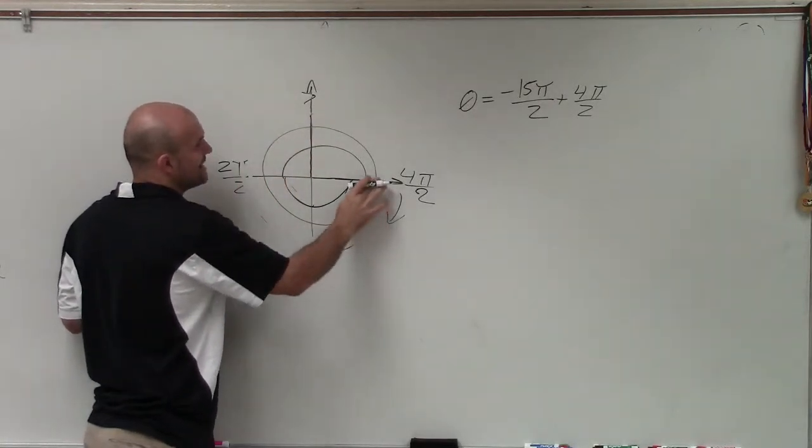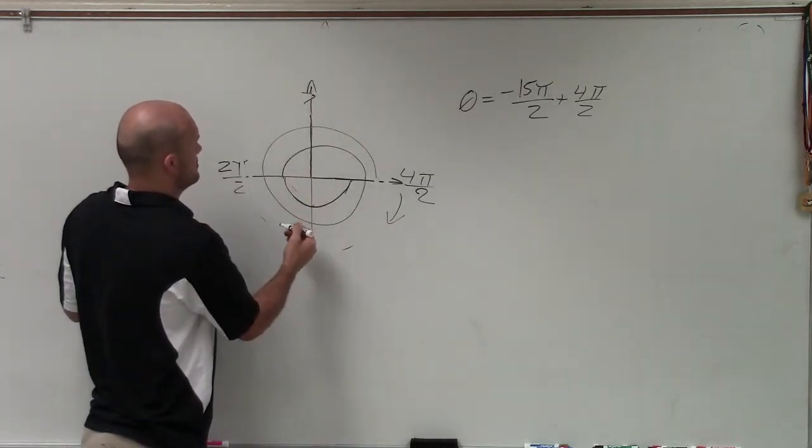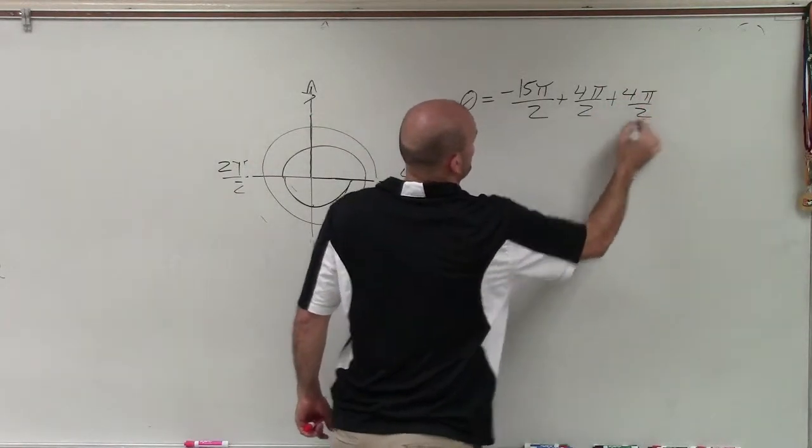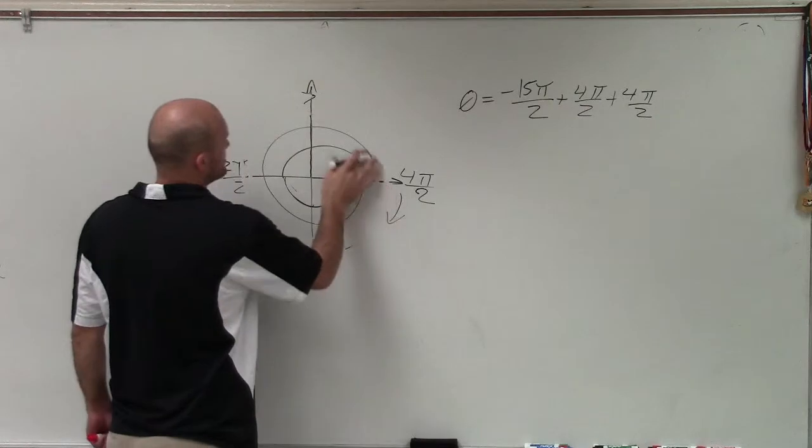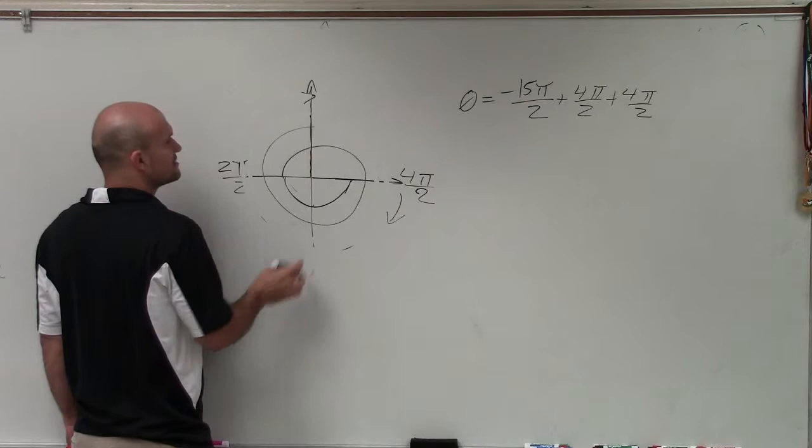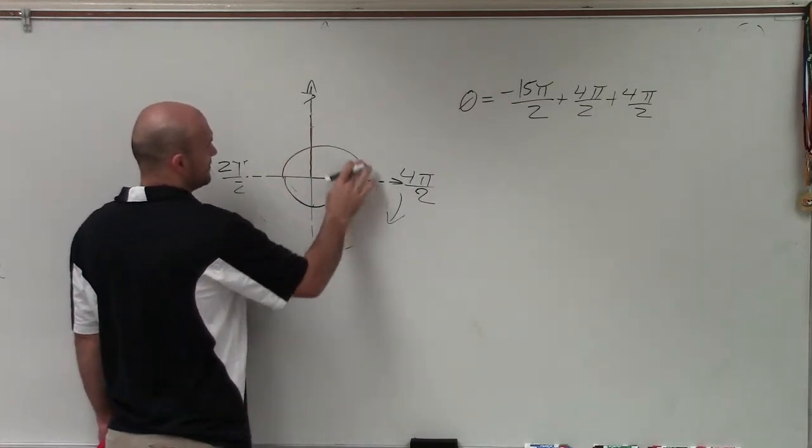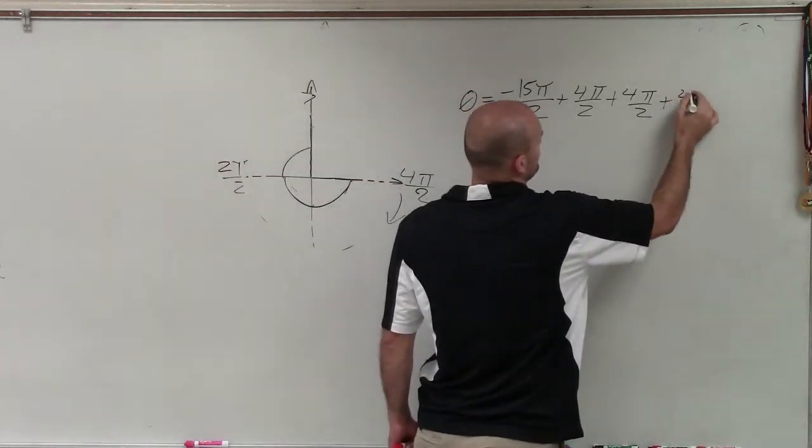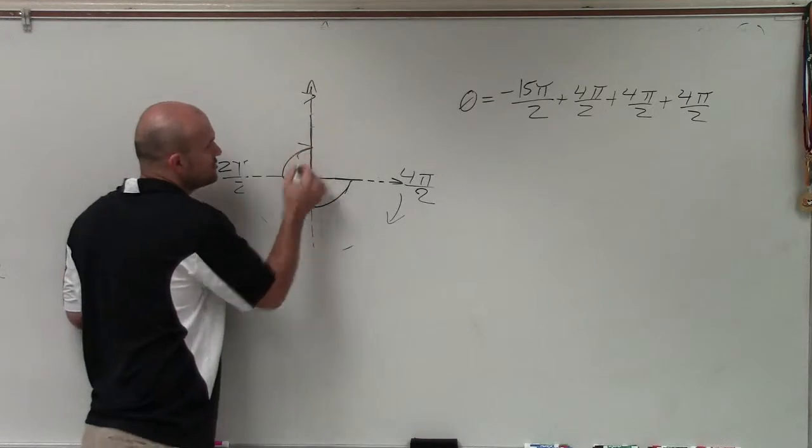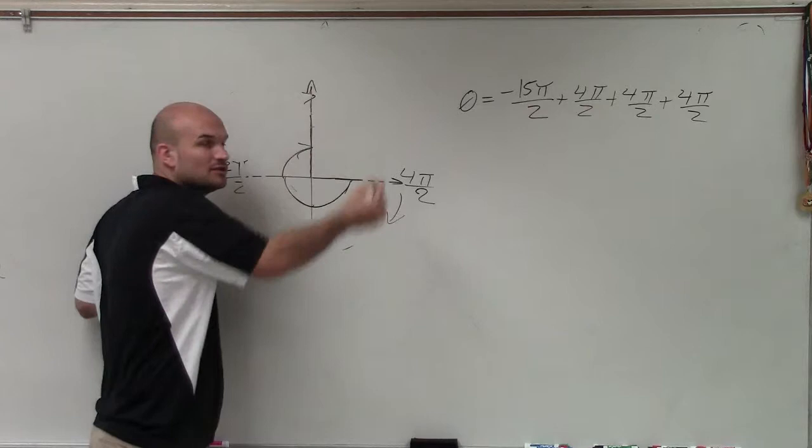And again, I'm saying I'm adding because I'm going in the positive direction. Oh, I didn't go all the way around. So I'll add 2 pi again. So by adding 2 pi again, you can see now, this is the smallest coterminal angle that starts here and ends here. All those other ones were just extra circles, extra revolutions that we had.